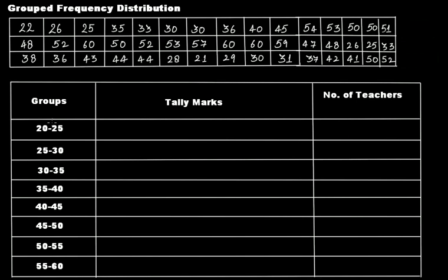Here we can see that we have made certain groups. The minimum age in this data is 21 and the maximum age is 60. Starting from age 20, we have groups: 20 to 25, 25 to 30, 30 to 35, and so on. Starting from 20 up to 60 we have made eight such groups, and that is why we call it grouped frequency distribution — because we have several groups. Each of these groups is called a class interval.